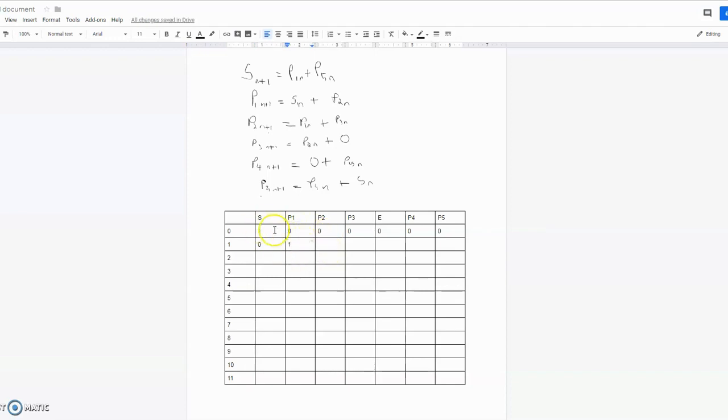Basically, we see that each value, the n+1 row value, is equal to the two adjacent. For S we have to consider P1 and P5 since they wrap around in a loop. For P5 we consider P4 and S. This systematic way of counting can help us fill our table faster.